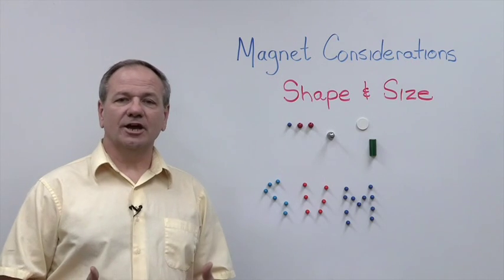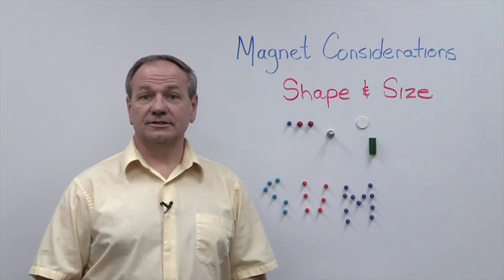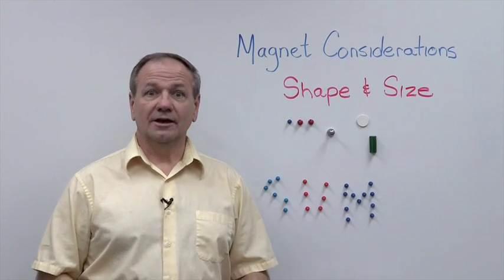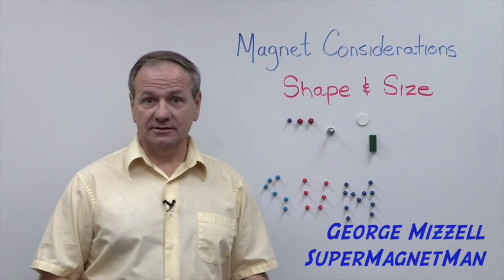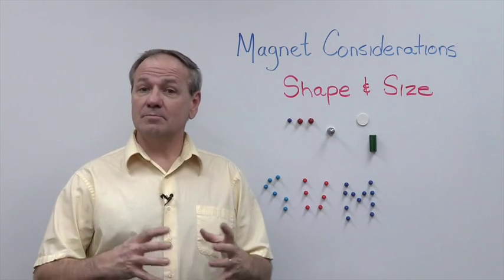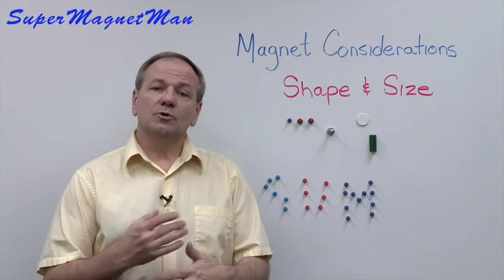First, we want to take a look at shape and size. These are two of the most important characteristics that everybody comes to us with. The first thing we want to know is, what size do I need? And they also will add to that, but it can't be bigger than this and it can't be thicker than that.